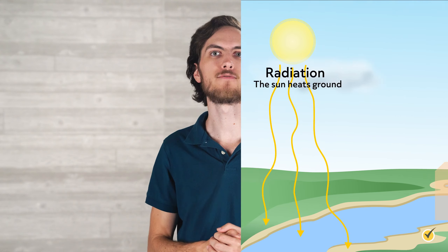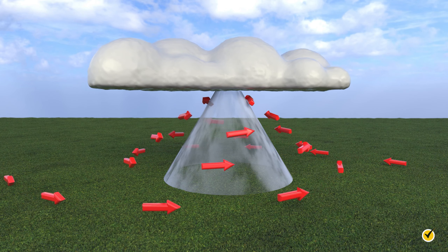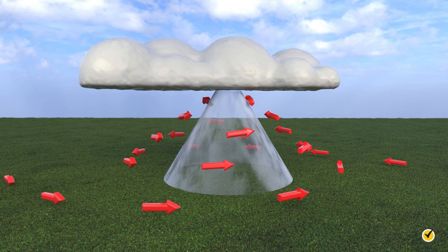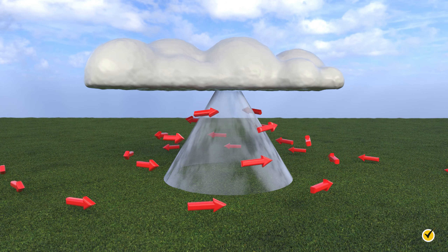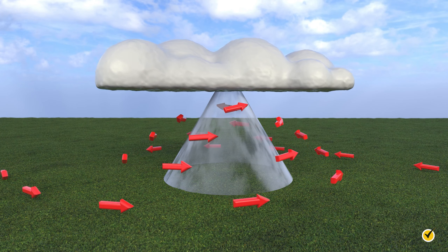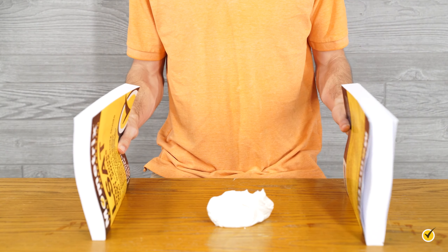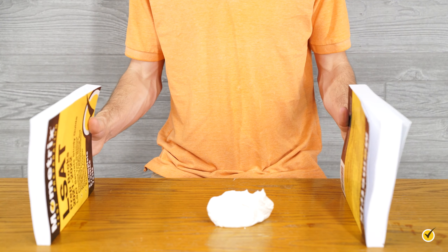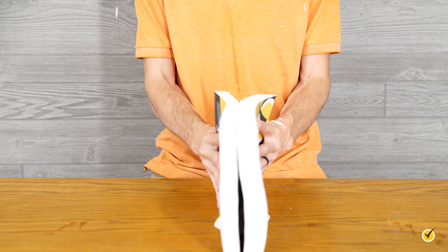Next up in our processes of cloud formation is the convergence of air masses. In the center of a low-pressure system, the winds are converging toward the center from high to low pressure. Think of it like whipped cream on a table — if you take two books and smash them together on either side, the whipped cream squirts upward. The same concept applies to air: as air masses converge toward a low-pressure system, the air has nowhere to go but up, and will eventually condense and form clouds.